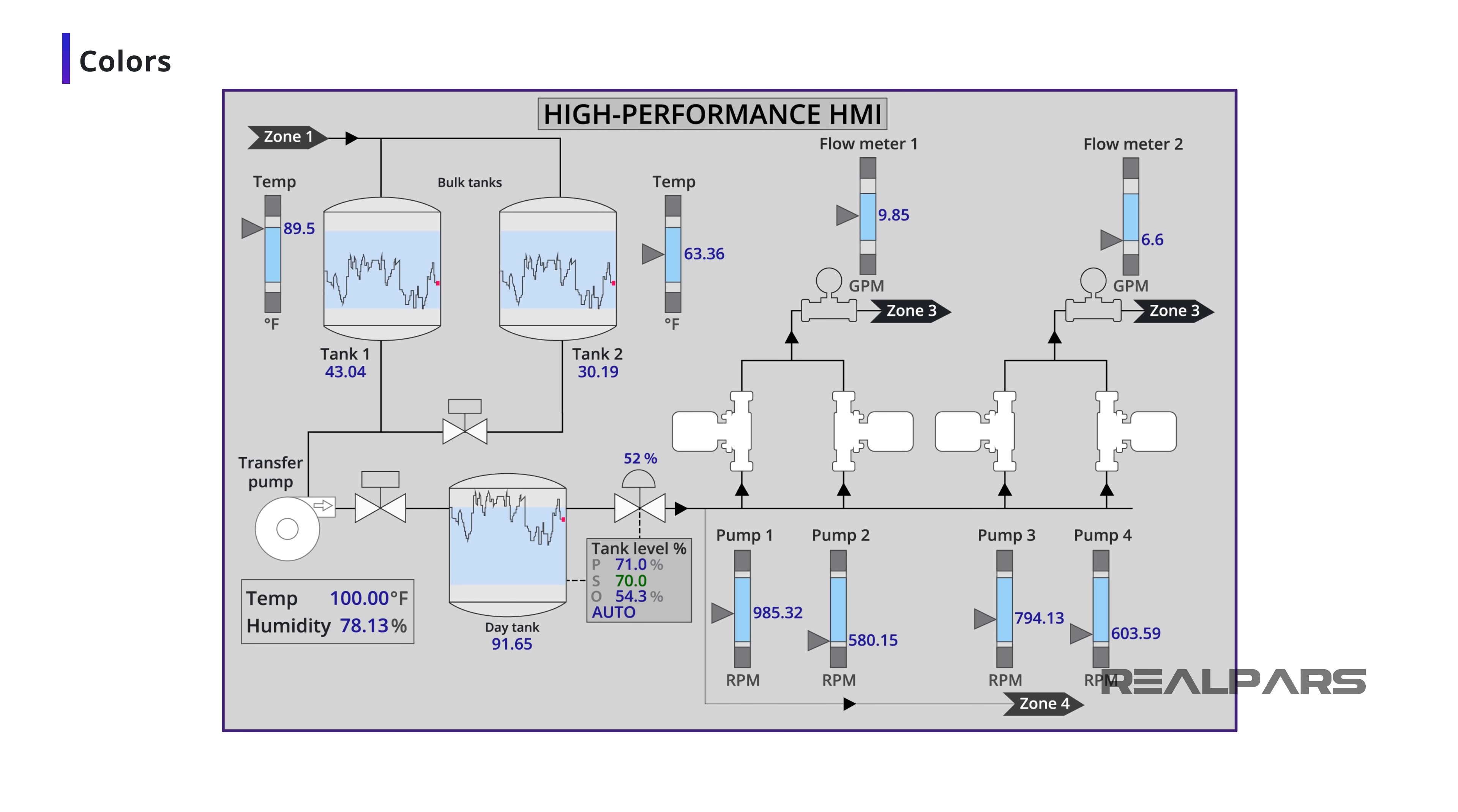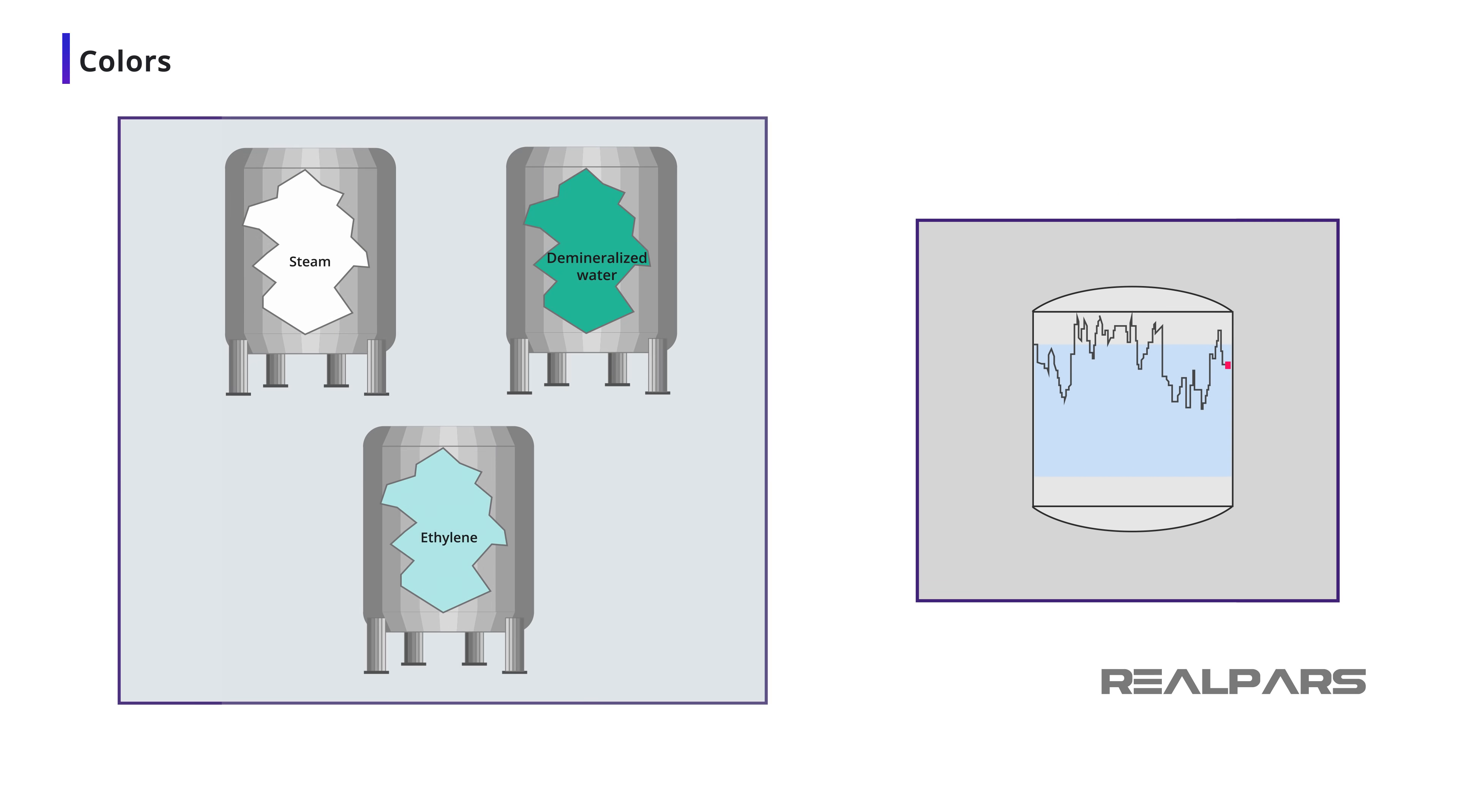Foreground colors should be kept to a minimum and used sparingly. For instance, process lines and tanks should be black, with more attention on line thickness. Color should not be used to indicate process material, such as using white for steam, green for demineralized water, and pale blue for ethylene. Using color to depict processes usually cannot be consistently applied in practice, and proves to be a distraction.